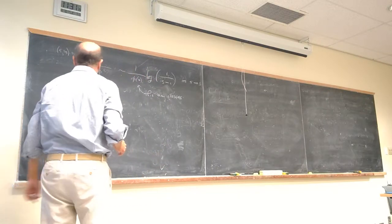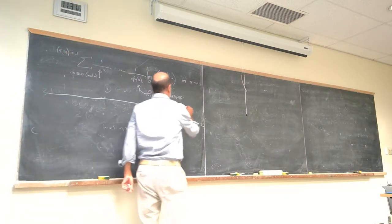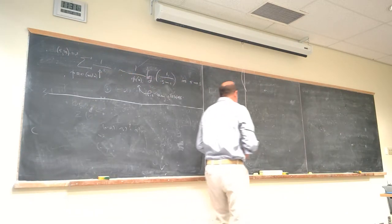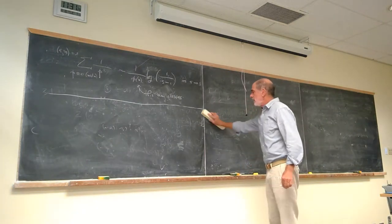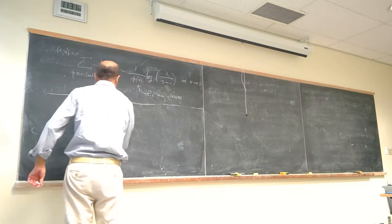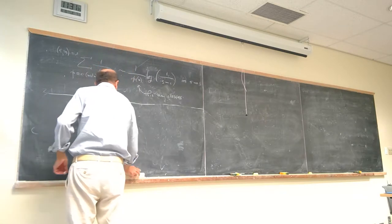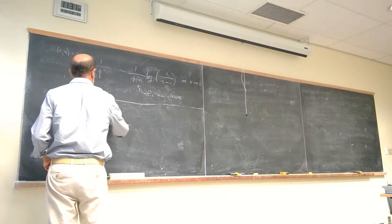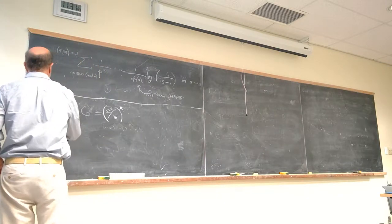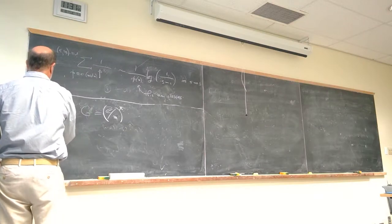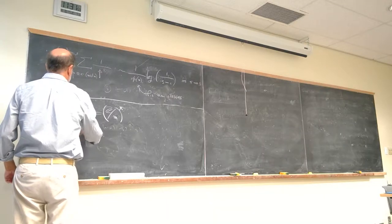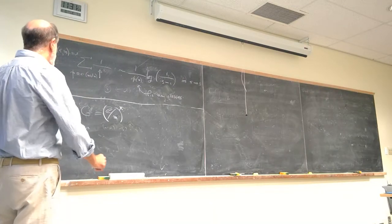That's Dirichlet's proof, and we have to set up a little bit. The brilliant idea he had was to apply the ideas of Fourier analysis, which had just begun to enter mathematics. He applied them to the finite group that Gauss had studied — the multiplicative group mod m. It's a wonderful combination of analysis with algebra.